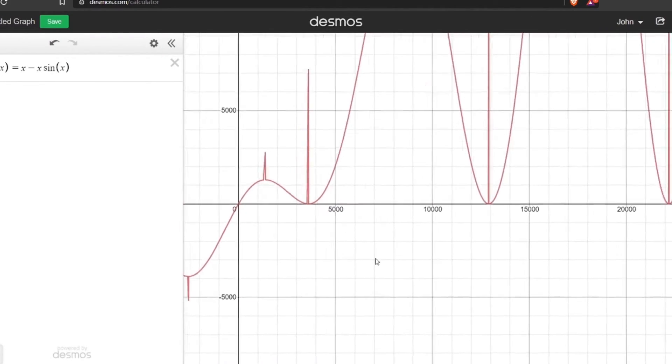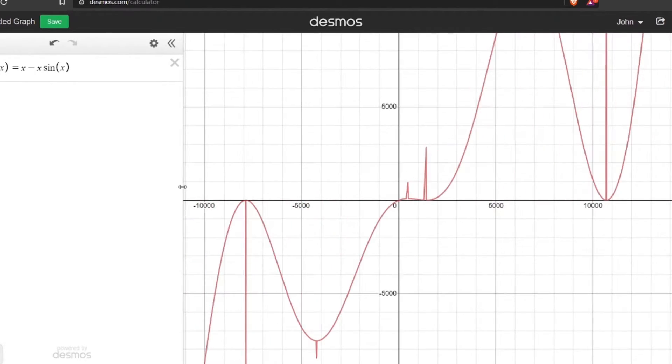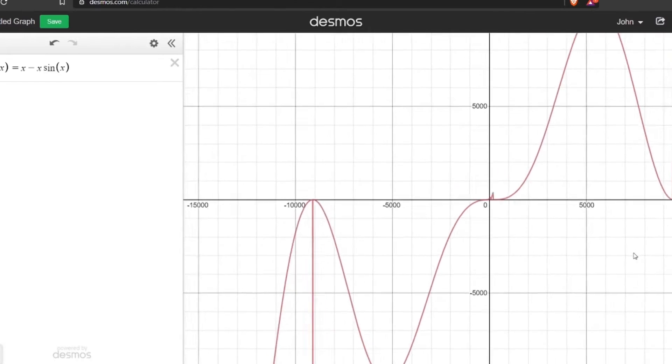Okay, so now we know how to get the illusion of a regular function, but that still doesn't explain why the graph becomes animated whenever we move the screen.